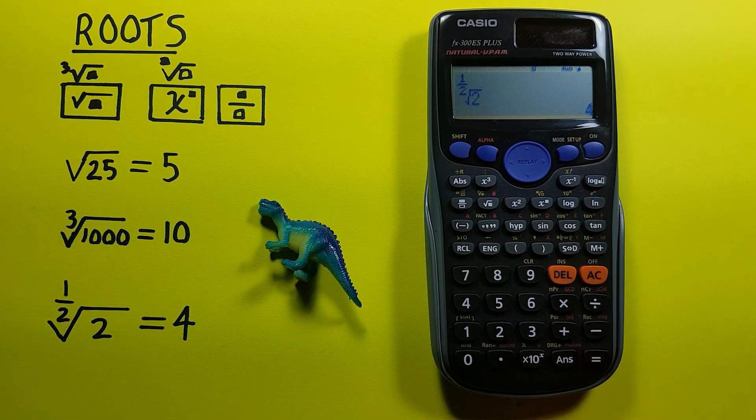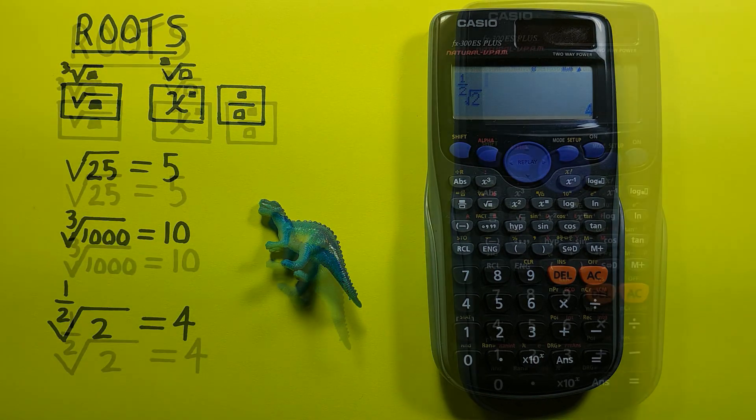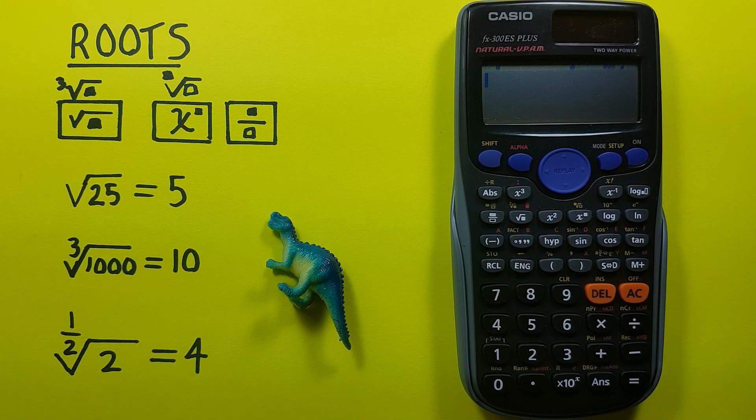And then enter 2 and press equals, and we get the half root of 2 is equal to 4.